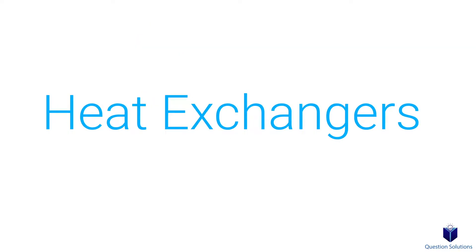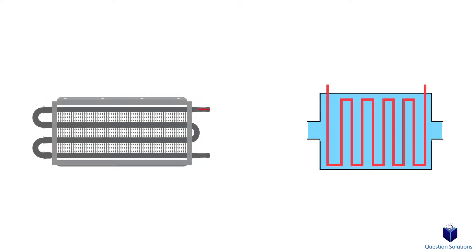Now let's talk about heat exchangers. You've probably seen these in radiators and heating and cooling systems. Usually they have two streams, and one of the fluids in the stream will transfer heat to another stream. In simple terms, two fluids will exchange heat without mixing.